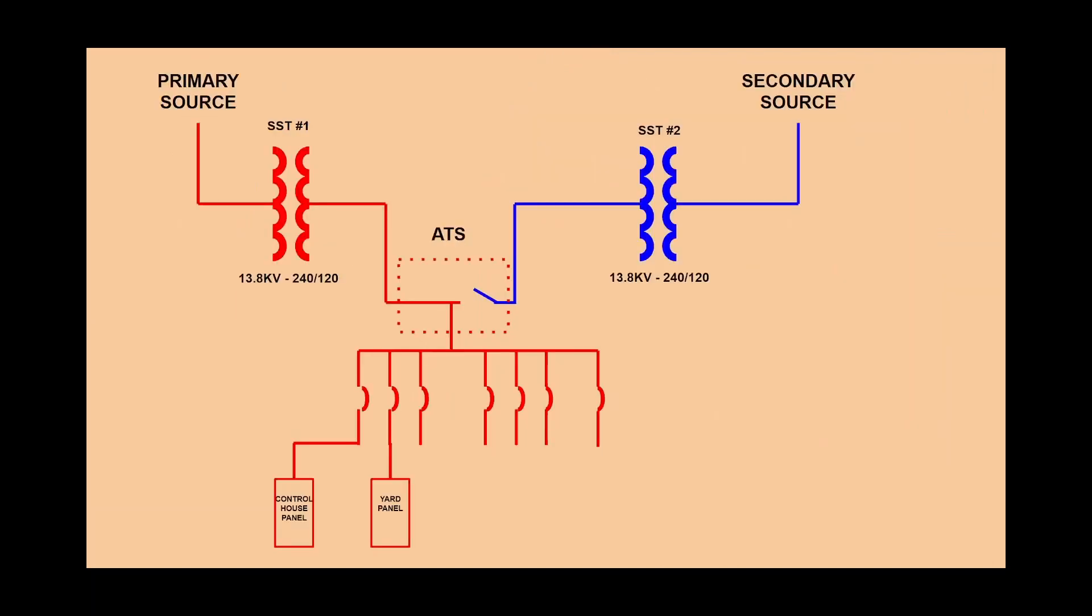Let's talk about a typical AC auxiliary system. Quick summary of what we're looking at. From the top down we have our sources we are receiving AC power from. In this example you can see that both sources are 13.8 kV and our SSTs are stepping the voltage down to 240-120 voltage.